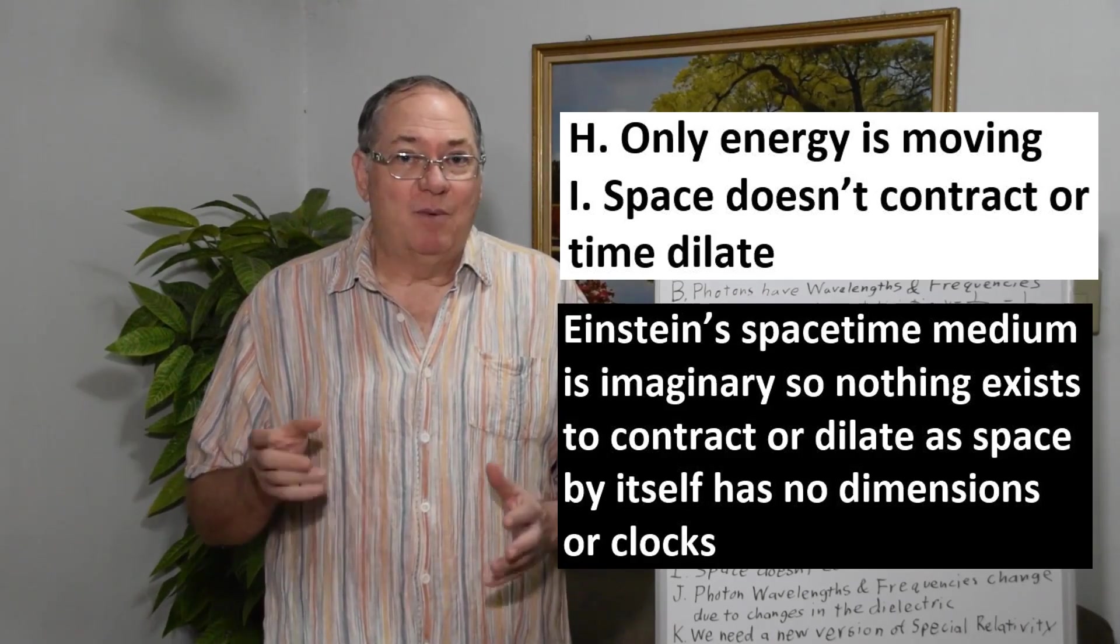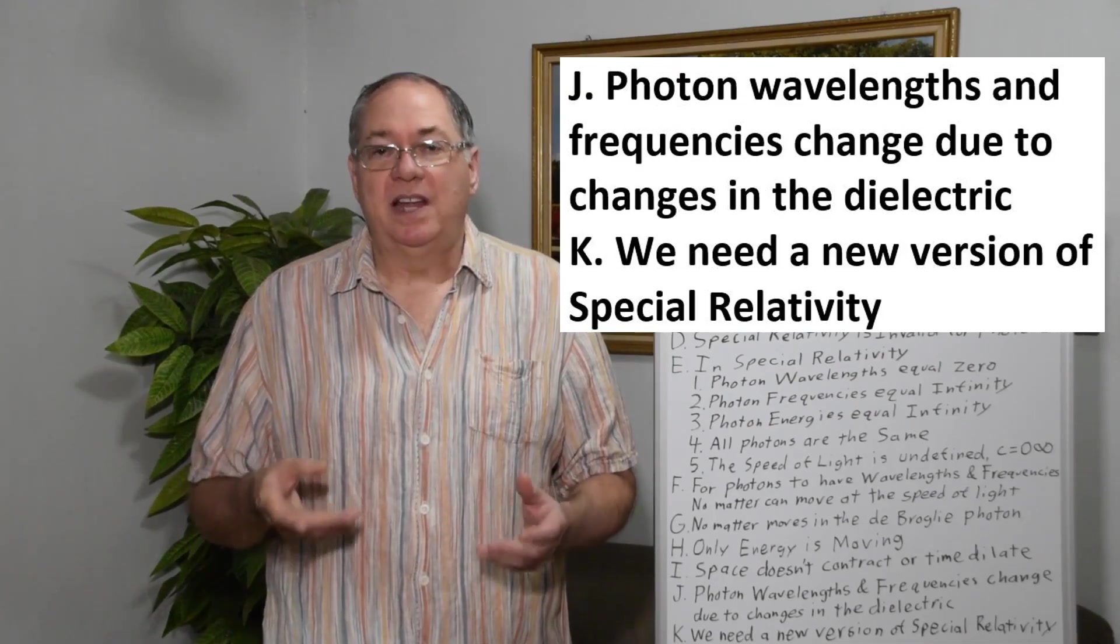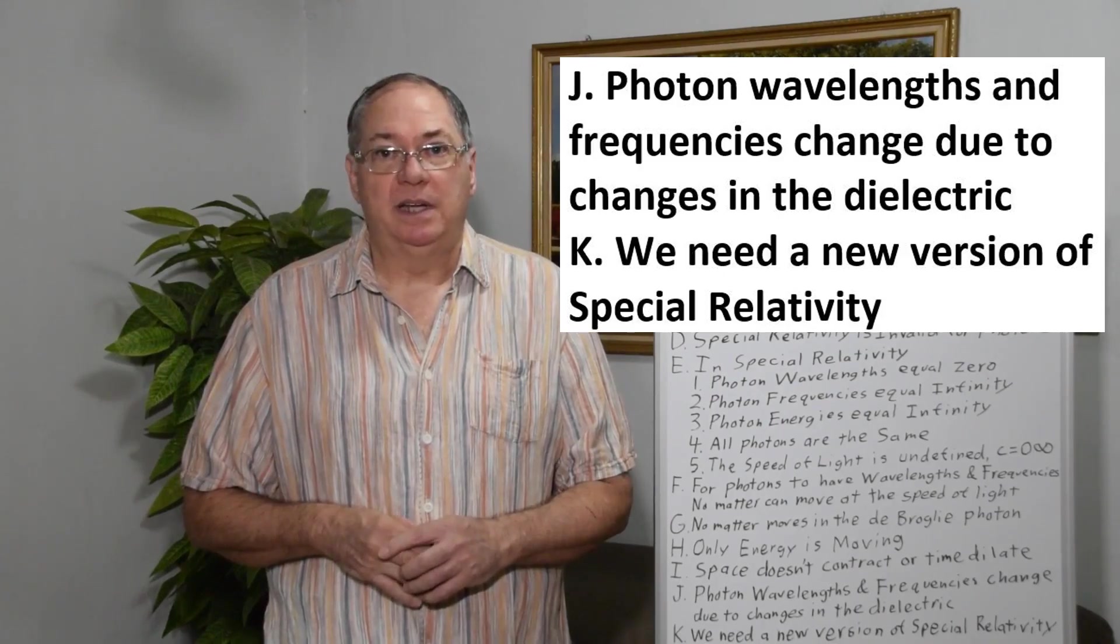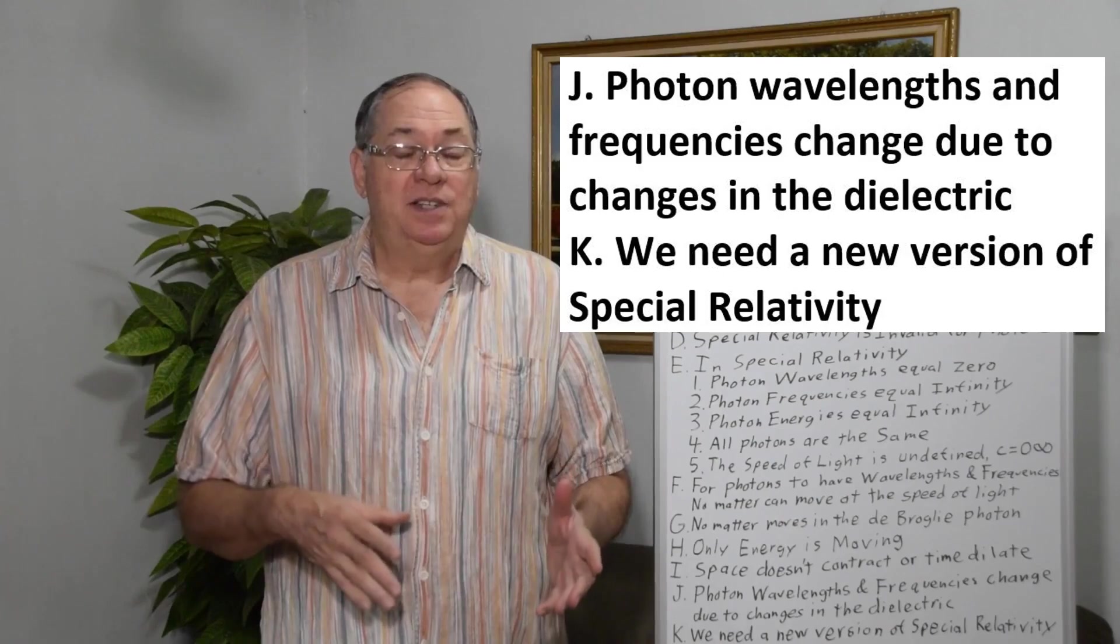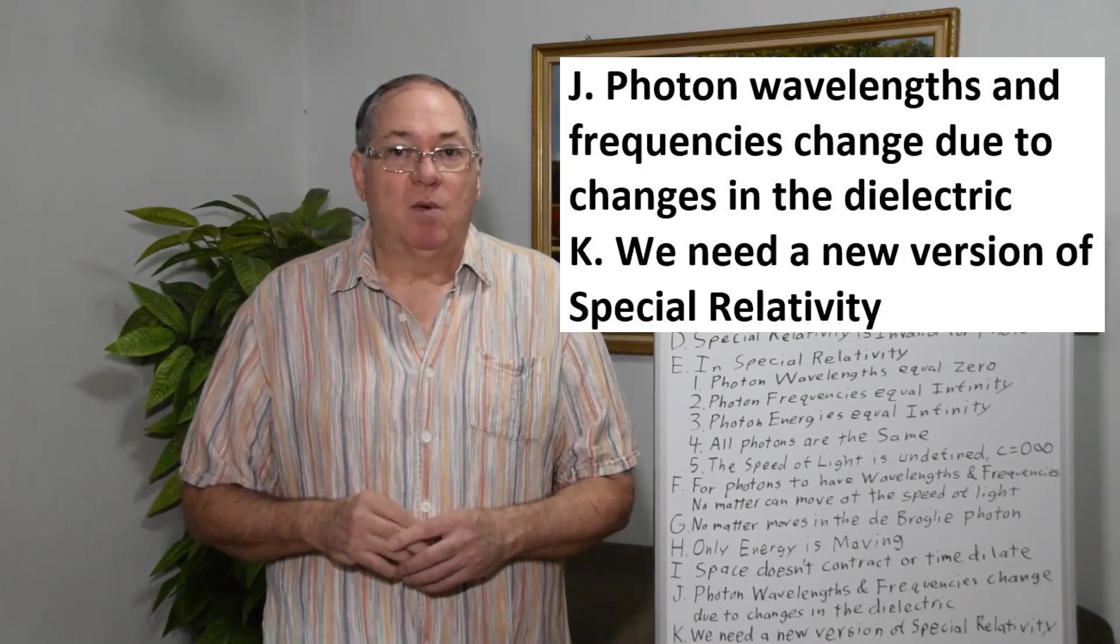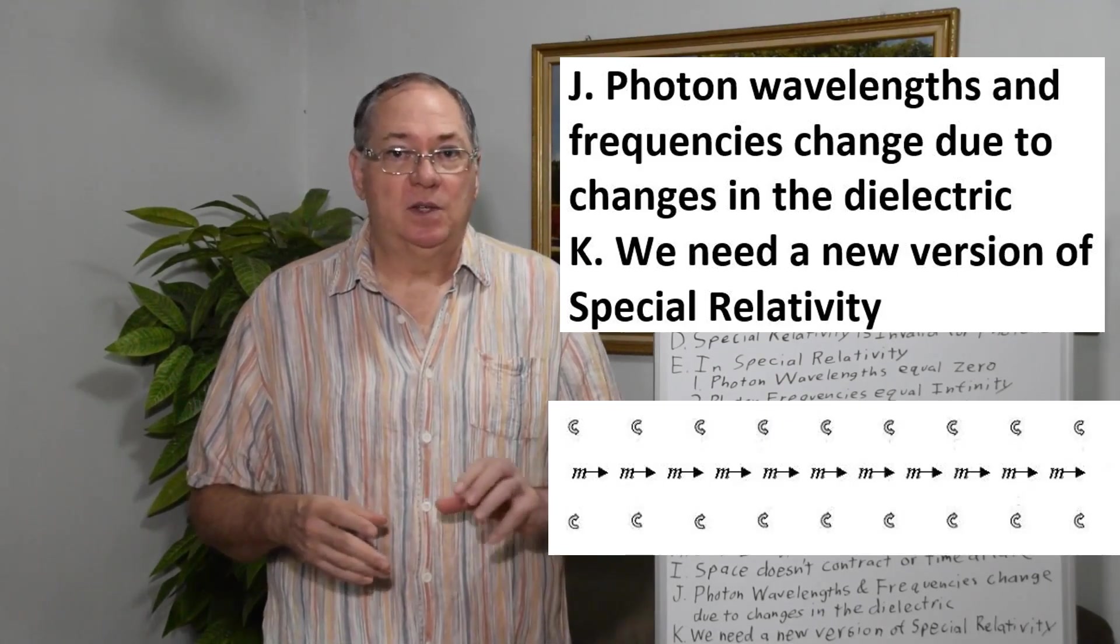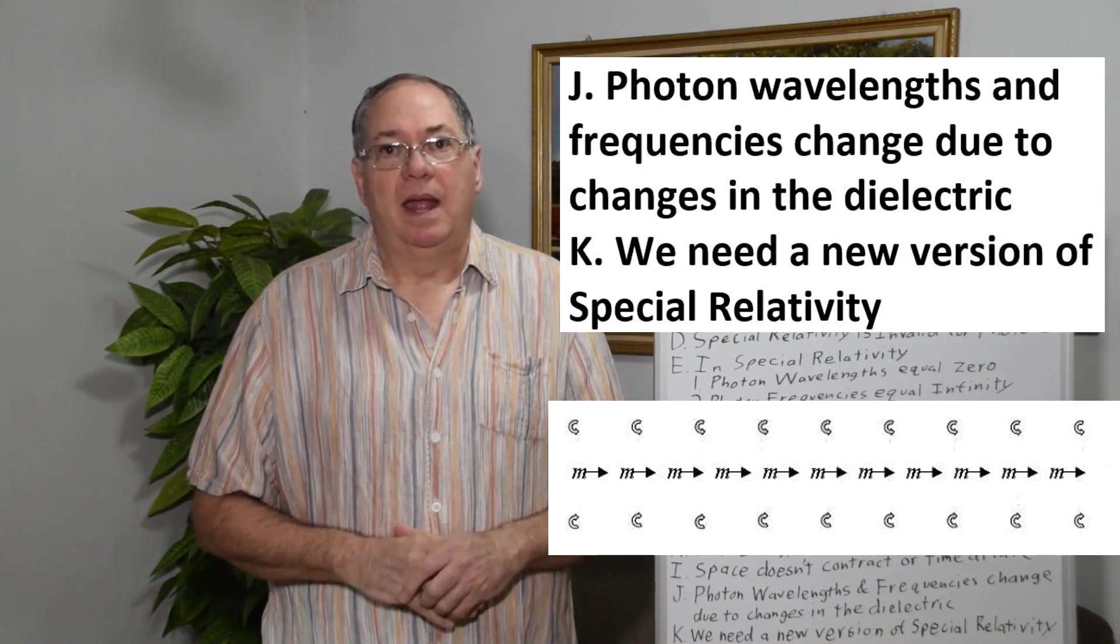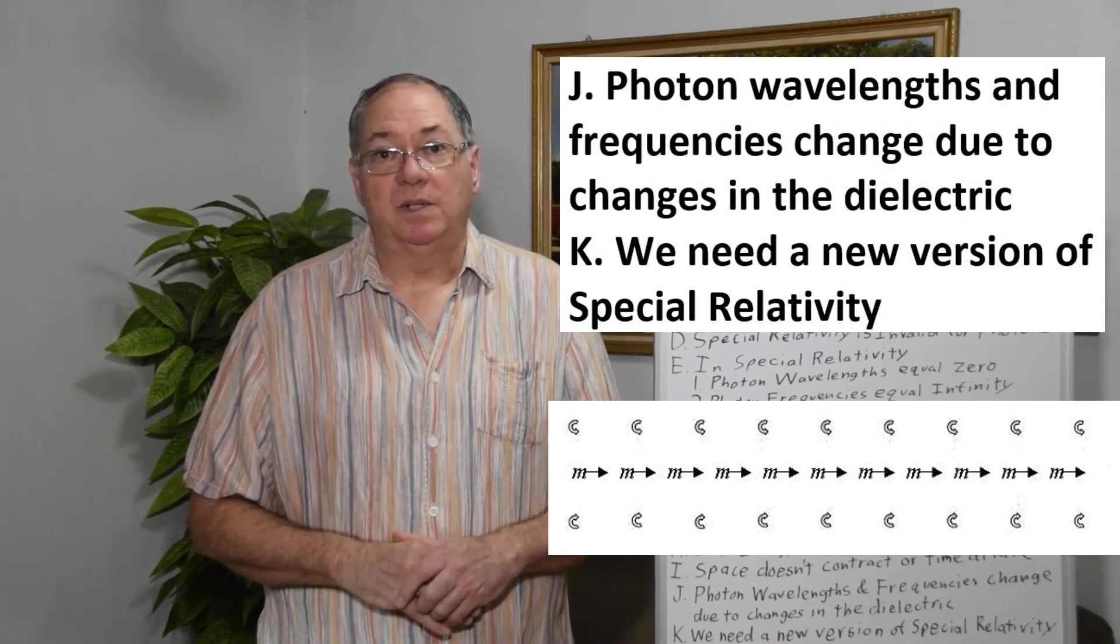So instead, the wavelengths and frequencies of photons must change because of changes in the dielectric. The permittivity and permeability change. Or as I like to talk about, they change because the quantum Vanderbilt's torque changes. The quantum Vanderbilt's torque, in this case, increases when a body moves through the quantum field. And the increasing torque slows clocks and shortens wavelengths.